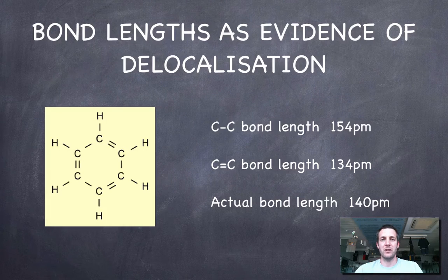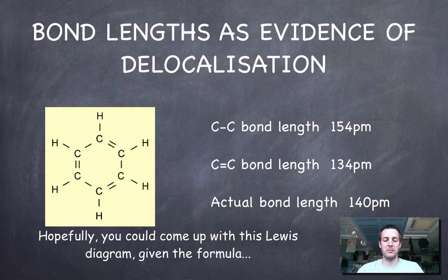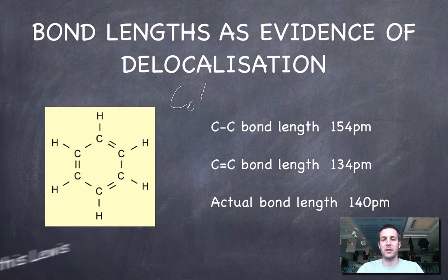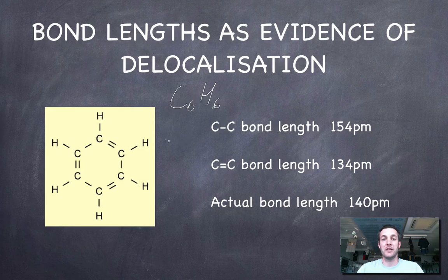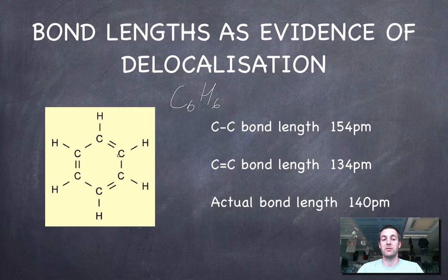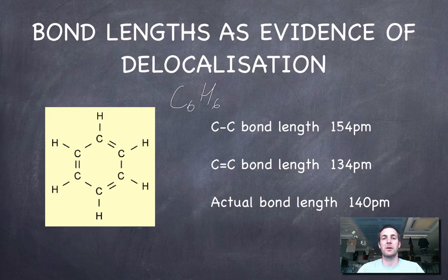We've ended up with this ring of carbons joined together by single and double bonds. This is the benzene molecule. It's got the formula C6H6. Having studied the benzene molecule and other molecules that have single and double carbon-carbon bonds, we've discovered that the single carbon-carbon bond length is on average about 154 picometers, picometers being 10 to the minus 12 meters.